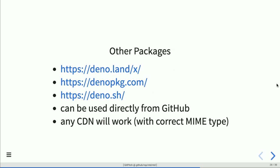Other packages can be found on deno.land/x, which is actually a redirection service for modules hosted on GitHub. Currently, registering your modules is done via a pull request on the Deno website repo, and it just redirects to GitHub. There is also deno-package.com, which I recently found, and deno.sh, but I think that's just one developer's shortcut for his own modules. You can import any code already on GitHub or anywhere else — it just needs to have the correct media types defined.